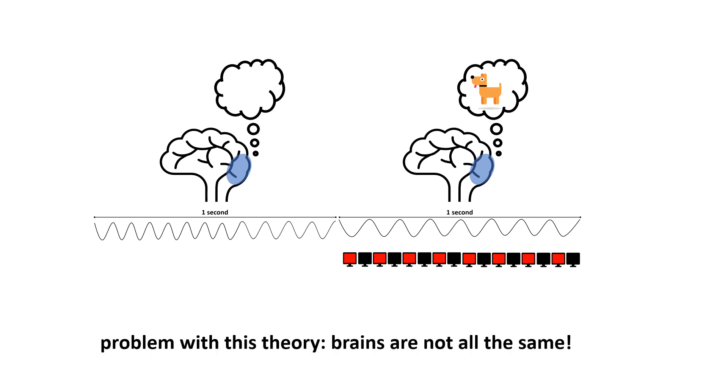The problem with this is that brains are not all the same, and there's actually a lot of natural variation in the rhythms that occur in visual cortex.